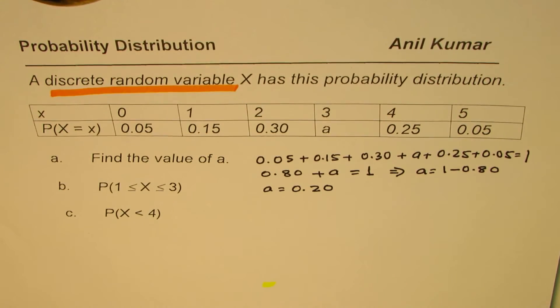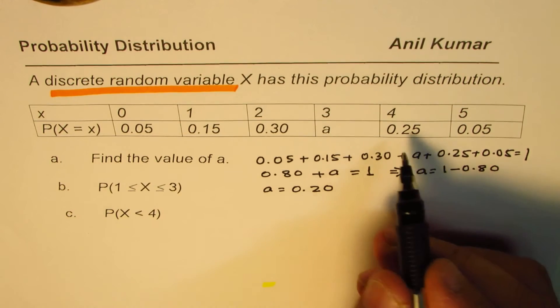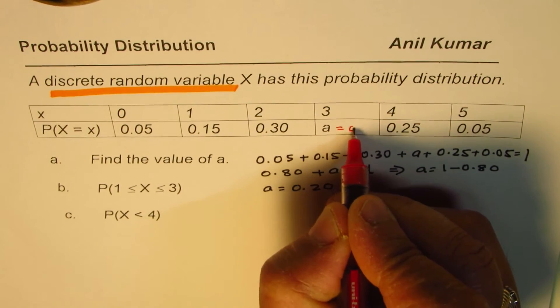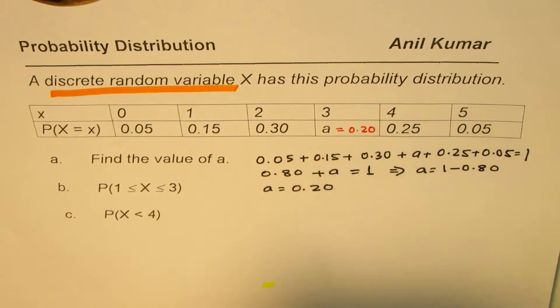We finally found the answer of A by equating the sum of these probabilities to 1. So we know A equals 0.20.